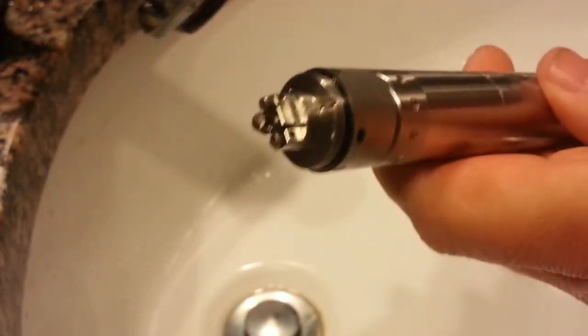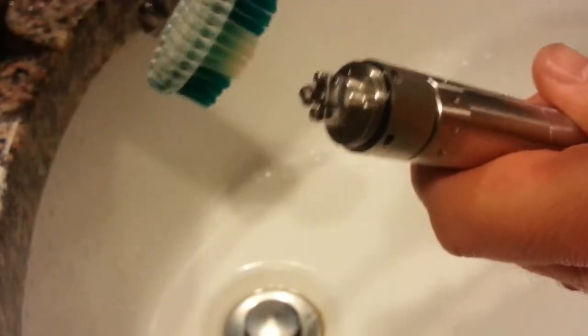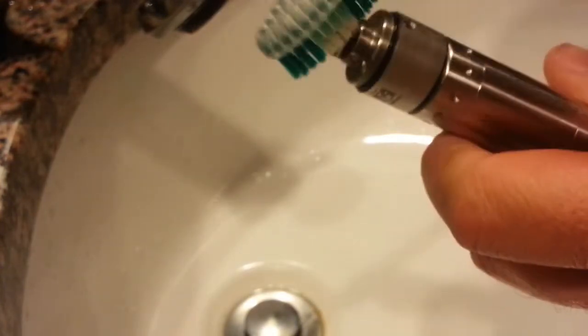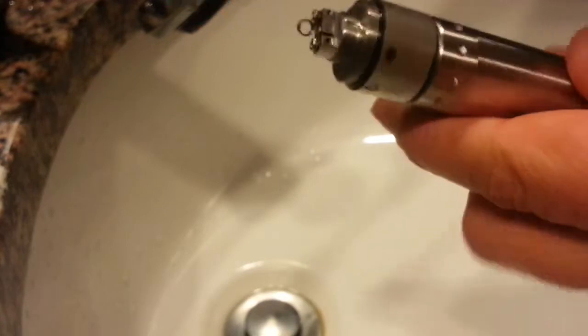And then what I'm gonna do here, before I wick it, I'm just gonna take an old toothbrush that I use to clean stuff with. I'm just gonna lightly brush the coils, make sure there's any little residual crap in there. The reason I'm brushing it lightly is because I don't want to mess up my coil that I took so much time making.